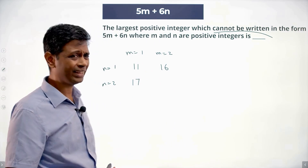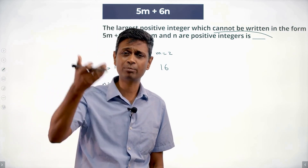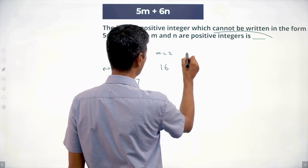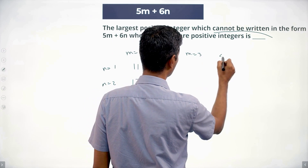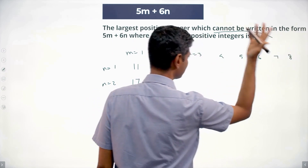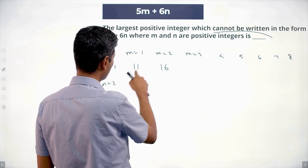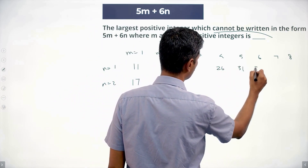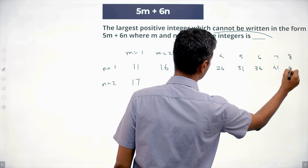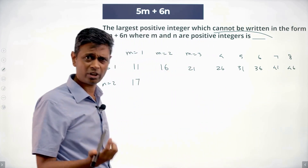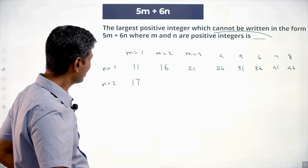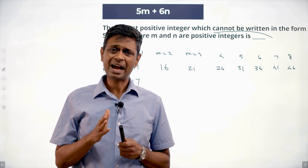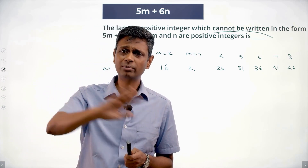Now I can generate a bunch of numbers. With n=1, I increase m: m=2,3,4,5,6,7,8 — giving 11, 16, 21, 26, 31, 36, 41, 46. All of these can be written. What I'm effectively doing is starting at 11 and keep adding 5 — all those numbers I can write.